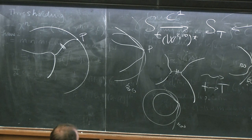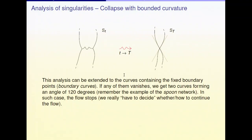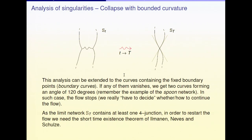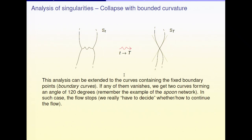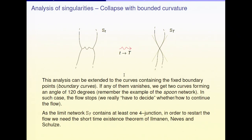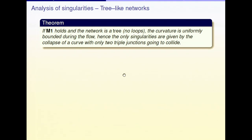When a curve on the boundary vanishes, you have to ask yourself how to restart the flow. All the theorems we developed work only for regular networks with triple junctions. So if you get a four-point, you absolutely need the short-time existence theorem of Ilmanen, Neves, and Schulze, which is more geometric measure theory based, in order to restart the flow.